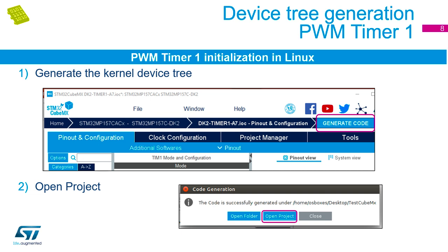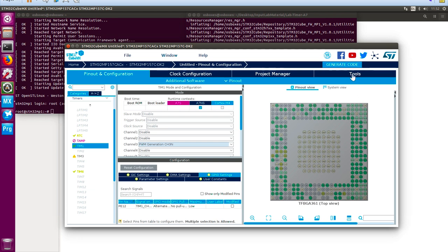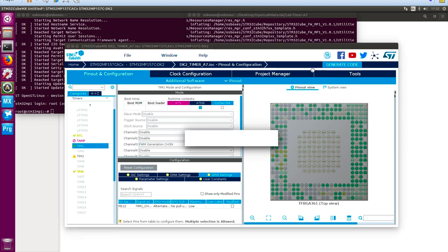Once we've confirmed it's PE12, we can hit the big blue button in the top right-hand corner — just below the social media icons — to generate code. We want to open the project when prompted. CubeMX is now going and pulling from those repositories we extracted earlier to generate our project.